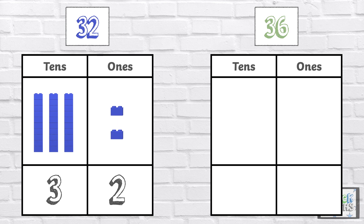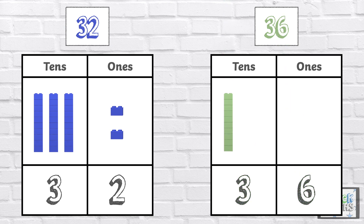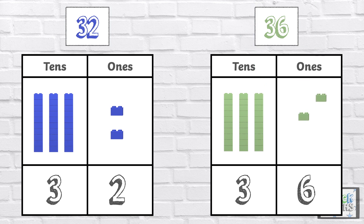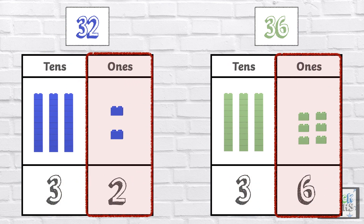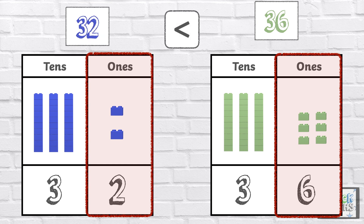The number 36 has three 10s and six 1s: 10, 20, 30, 31, 32, 33, 34, 35, 36. Remember, when we compare numbers, we look at the 10s digits first. Both numbers have three 10s, so now we need to compare the 1s. Two 1s is less than six 1s, so 32 is less than 36.